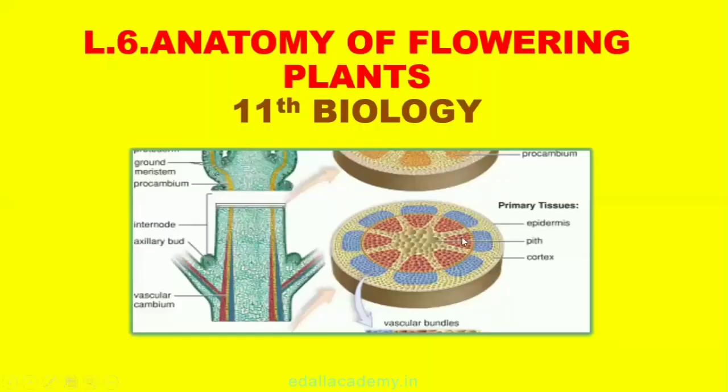Chapter 6: Anatomy of Flowering Plants. Topics to be covered are: 6.1 The Tissues, 6.2 The Tissue System, 6.3 Anatomy of Dicotyledonous and Monocotyledonous Plants, and 6.4 Secondary Growth.